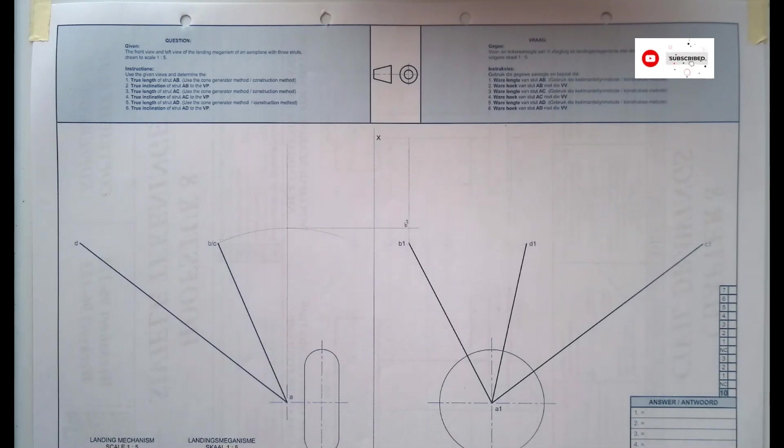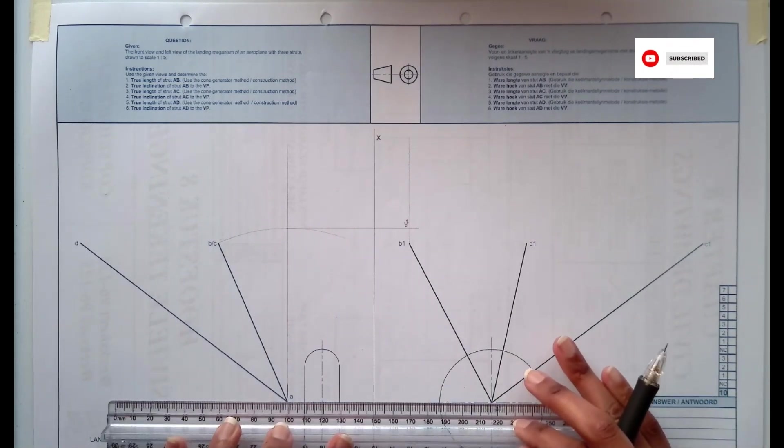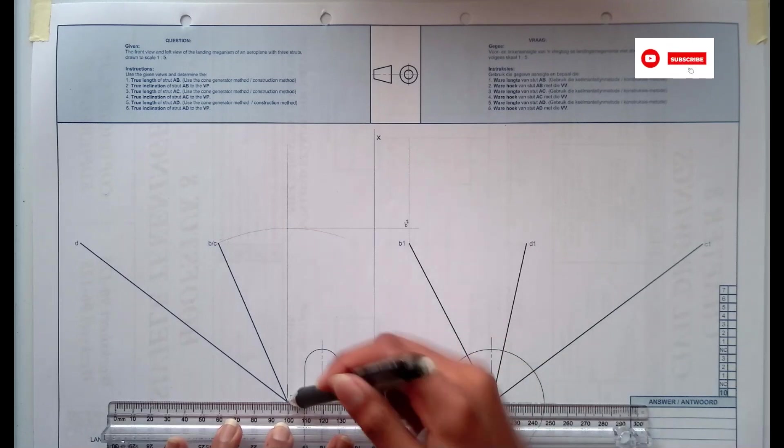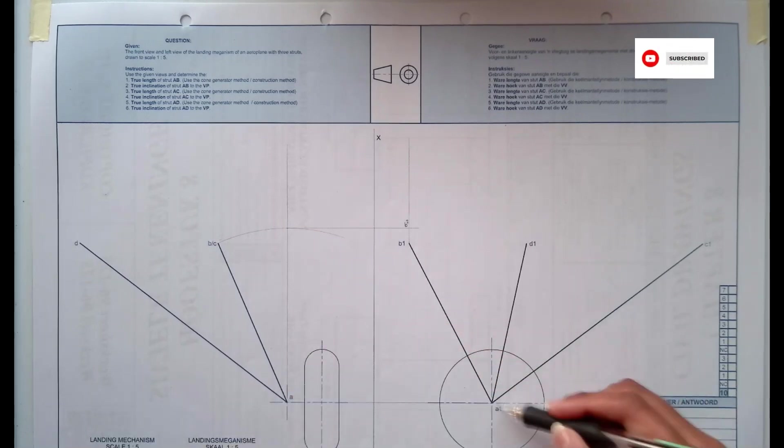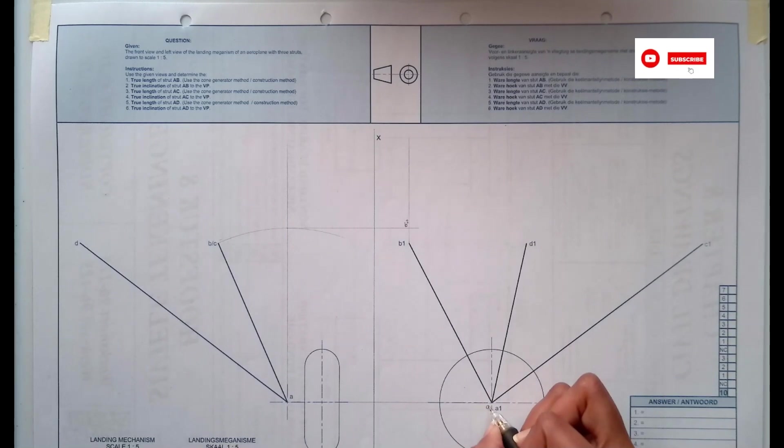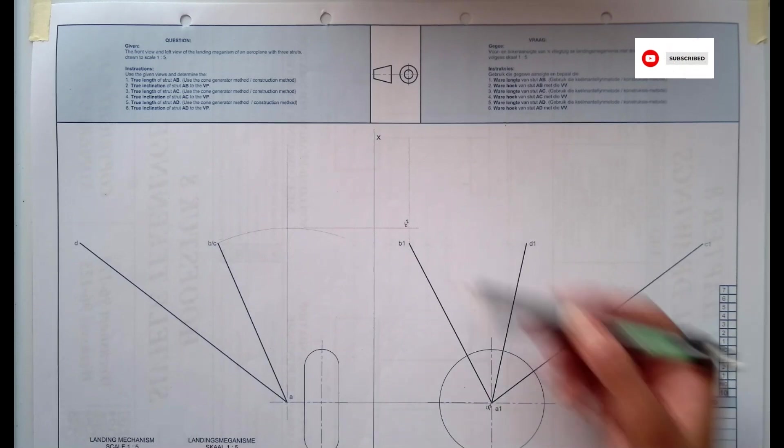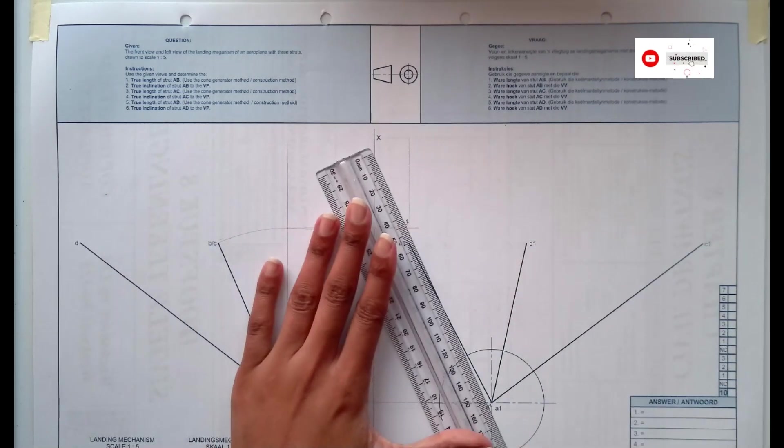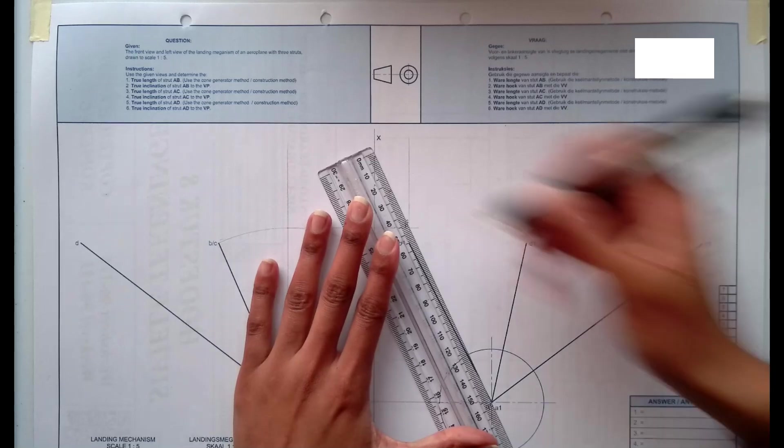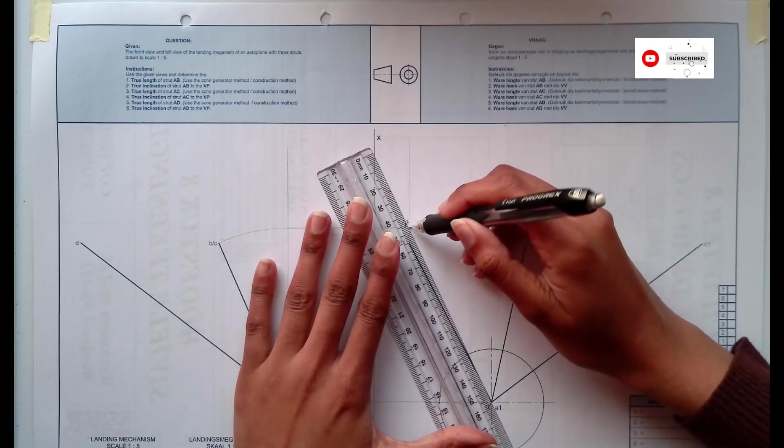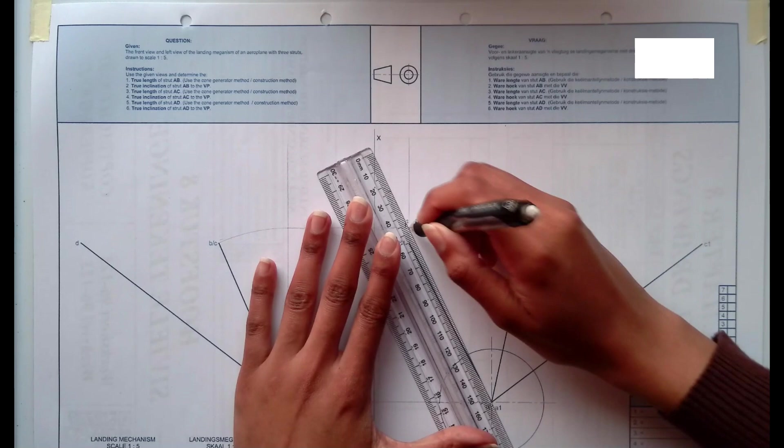I'm now going to take the ruler, join A1. I'm going to extend this using a construction line here. And then automatically I will also have A2 here. Now what you need to do, you join A2 with B2. So that is now the true length.